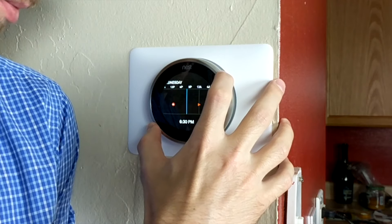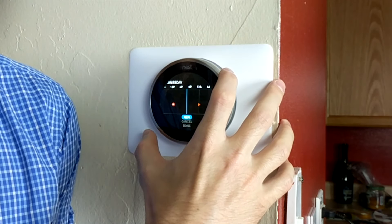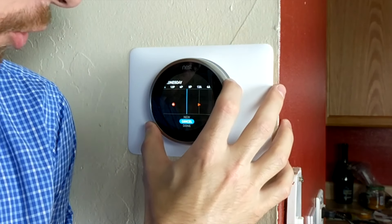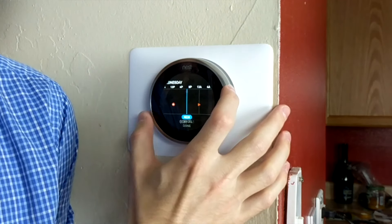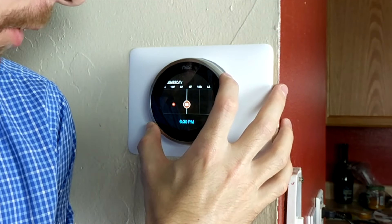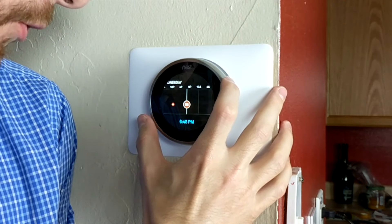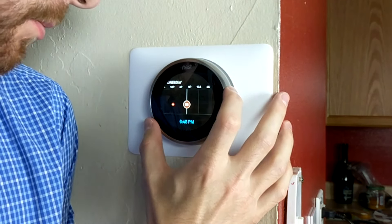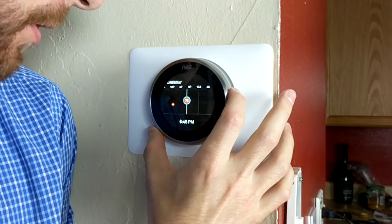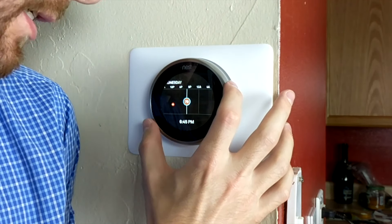We're going to set 6:30 pm on Wednesday. Press in and then hit the new button to create a new change. You'll then be given the option to set the time, so again we're going to set 6:45 pm on Wednesday. Press in to select that and then you'll be able to scroll around to set the desired temperature.